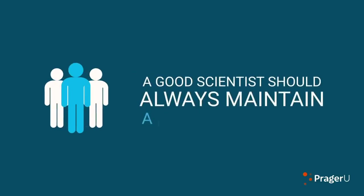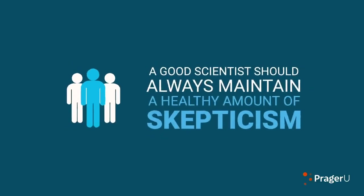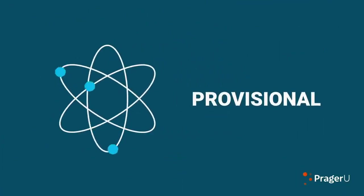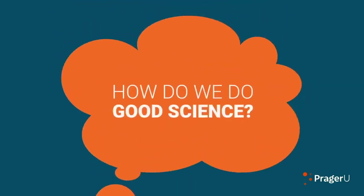What Feynman is saying is that a good scientist should always maintain a healthy amount of skepticism. Science is by its nature provisional. Science would stagnate if we merely accepted proclamations of past authorities.